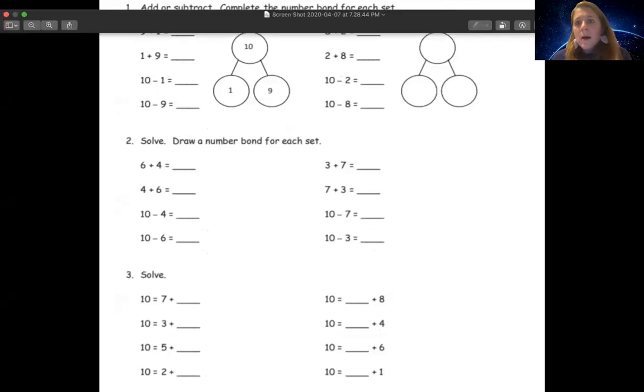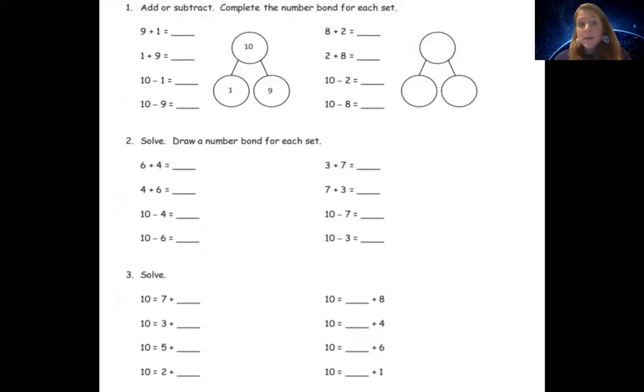So if you have this math page, then this will apply to you. It says add or subtract, complete the number bond for each set. Now in class, we talk about them being called number bonds. Sometimes we talk about them being called math mountains. Either way, it's the same thing that we've learned at school. We know that the two numbers on the bottom are going to somehow combine and equal the number on the top.